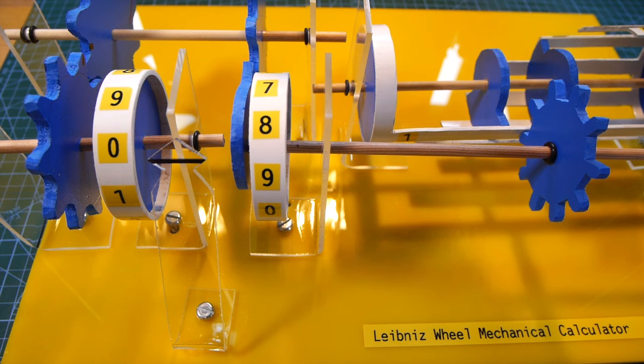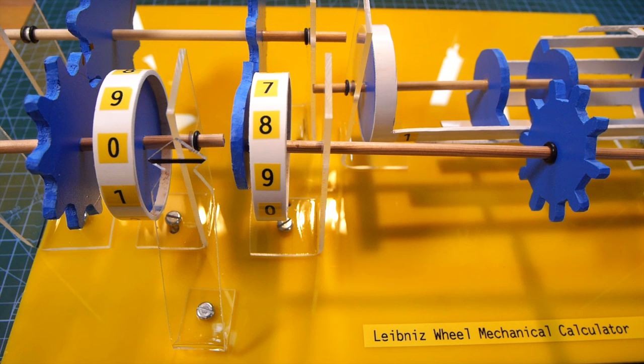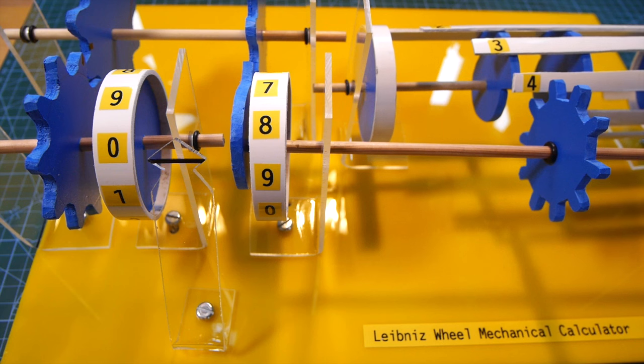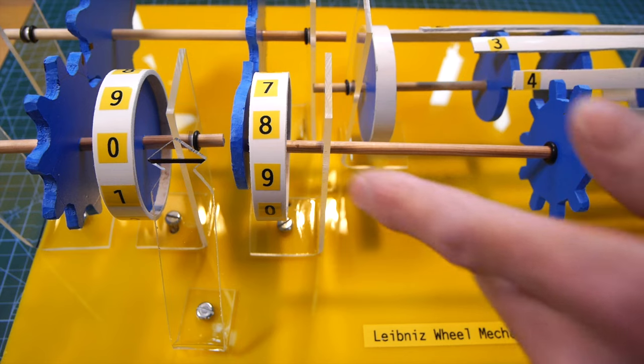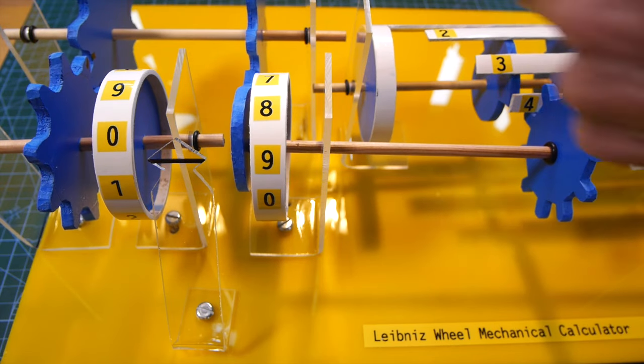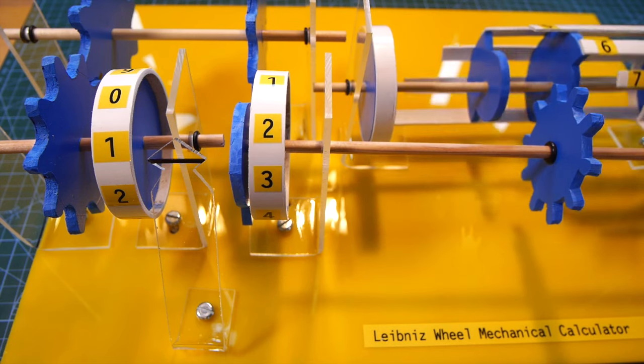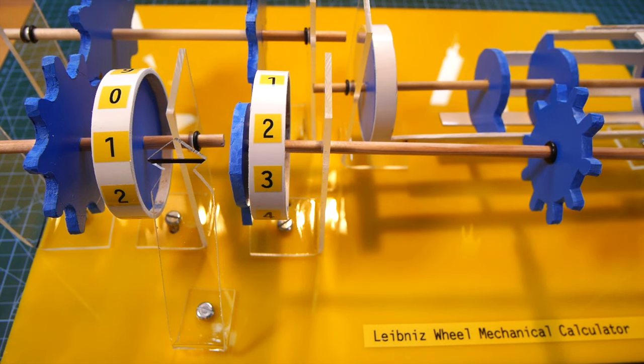So I've got a system here where we can carry forward the 10 and have one and two showing on the counting drums. So we're still lined up with four on the Leibniz wheel so let's see what happens if we add four to eight. So there's the four these gears are now turning and it's not quite lined up but it will do.